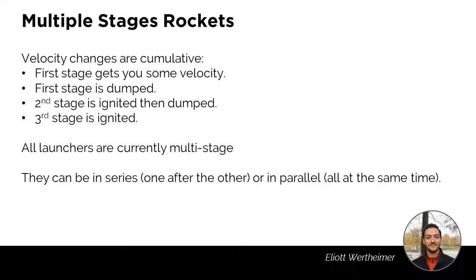Any change in velocity achieved by a rocket is cumulative. A first stage gets you some velocity, then you discard that stage and the second stage ignites for additional velocity, then you discard that stage, and finally the third stage carrying the payload ignites to take you to your final destination. Currently all launchers are multi-stage — either in series, lighting one after the other, or in parallel, lighting all at the same time.